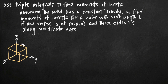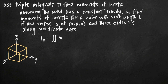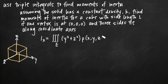We need to find the moments of inertia. When dealing with a three-dimensional object in a three-dimensional coordinate plane, we're going to find I_x, I_y, and I_z — the moments of inertia about the x-axis, y-axis, and z-axis. To find the moment of inertia about the x-axis, I_x equals the triple integral over solid E of (y² + z²) times the density function ρ(x, y, z) dV.